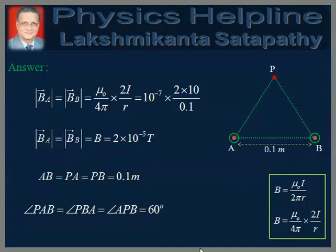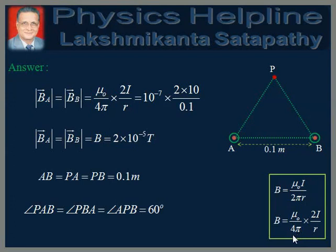The magnetic field produced by an infinitely long straight conductor carrying current I at a perpendicular distance R from it is given by B equals mu-zero I over 2 pi R. We will write this as B equals mu-zero over 4 pi into 2I over R, because we happen to know the value of mu-zero over 4 pi.